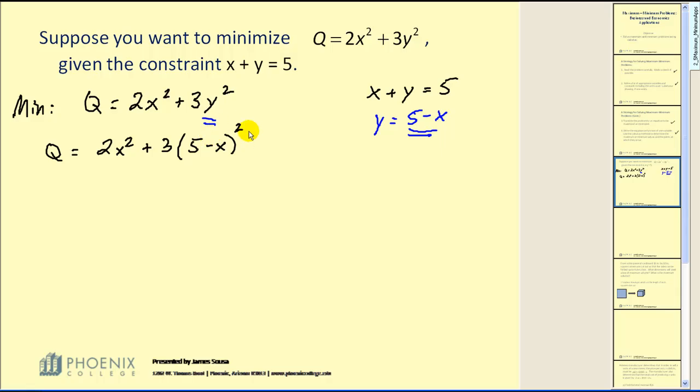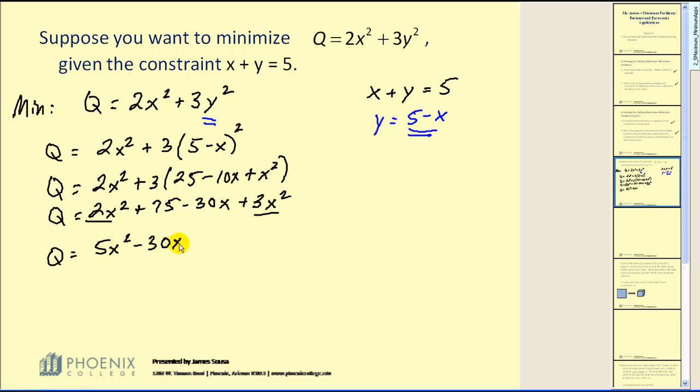So we've done our substitution for y. And now we need to expand this, simplify it, and see what we have. Combining like terms. Our function Q is equal to 5x squared minus 30x plus 75.